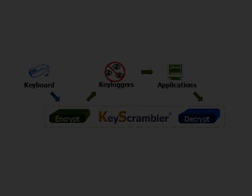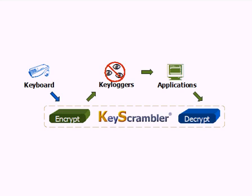So how does Key Scrambler work? Key Scrambler encrypts your keystrokes at the kernel driver level, deep inside the operating system. When the keystrokes arrive in the destination application, Key Scrambler decrypts them. Keyloggers are left with only indecipherable encrypted keys to record.